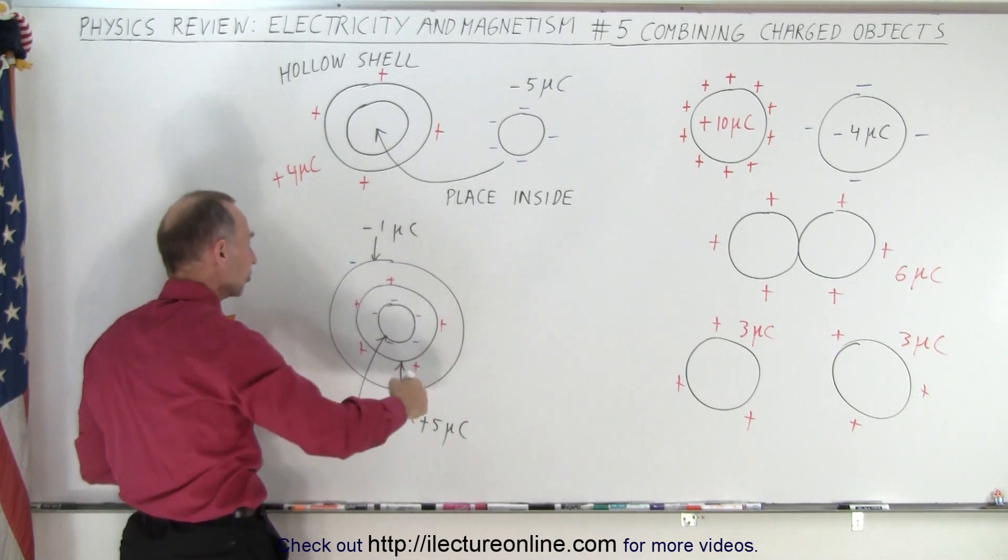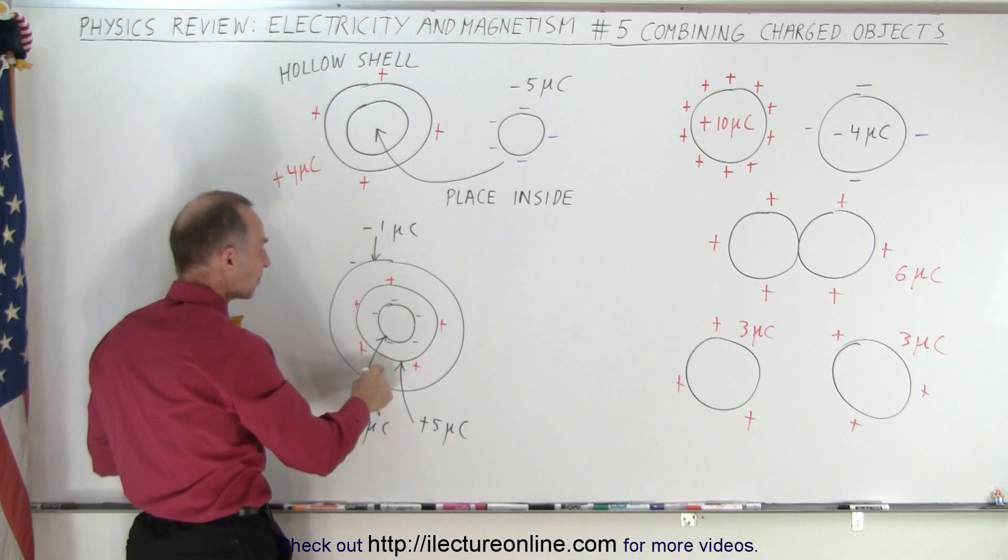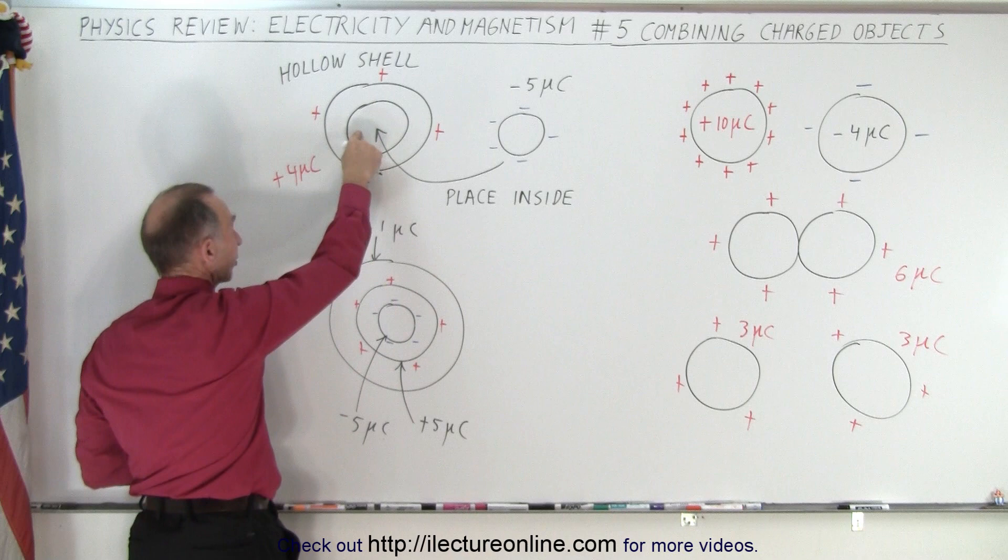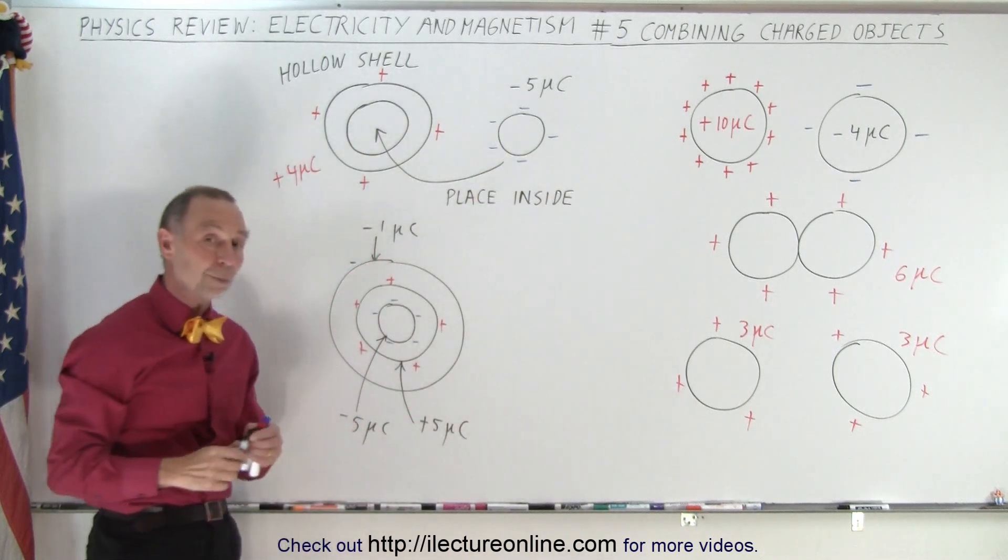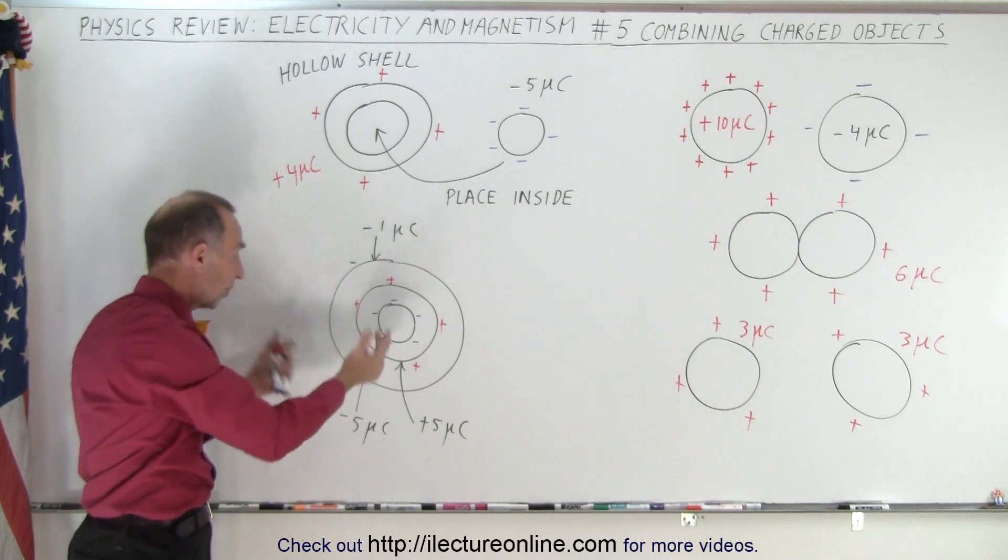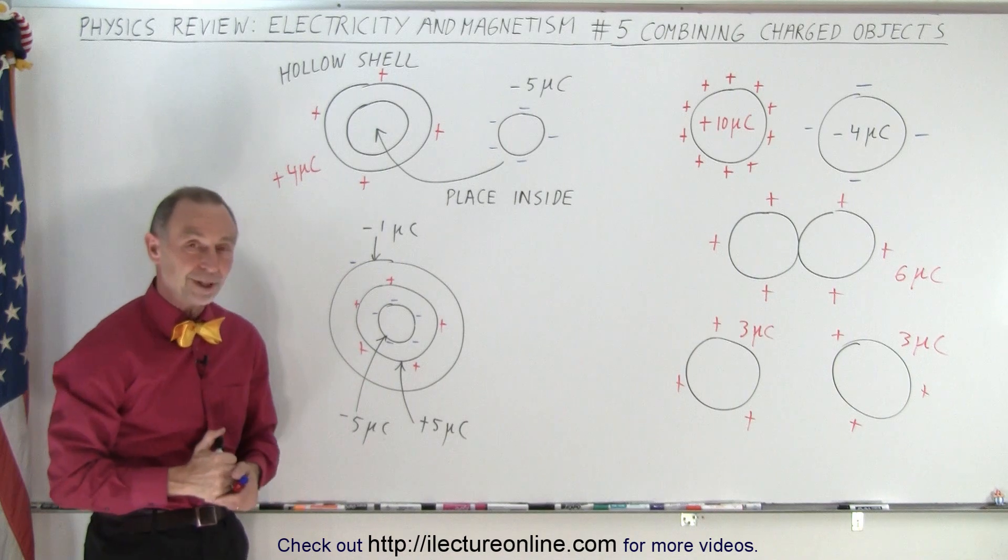Notice that the total number of charges will still add up to what we started. The plus five and the minus one together give you the plus four, and the minus five on the inside will still be the minus five. But that will be the new arrangement of how the charges are distributed on this particular object, and that is how it's done.